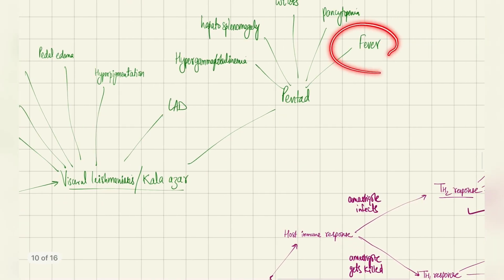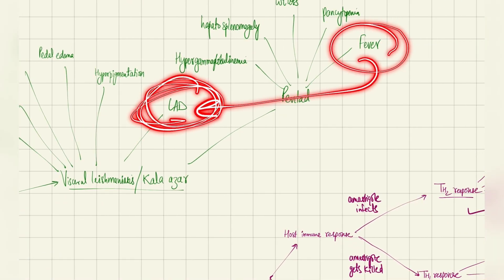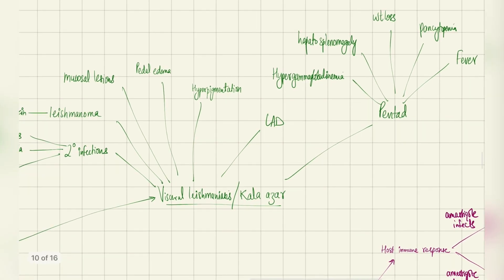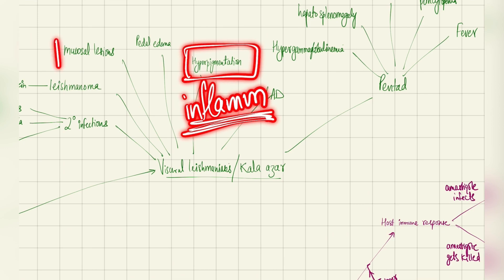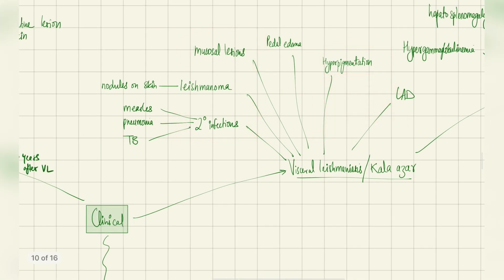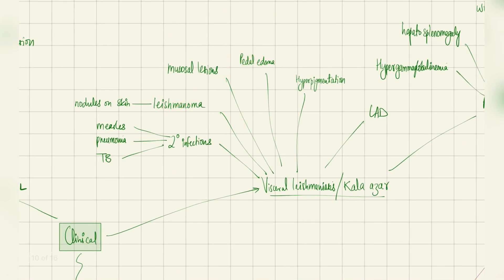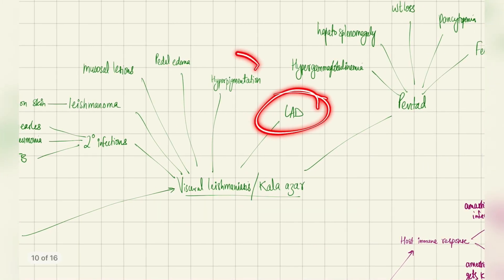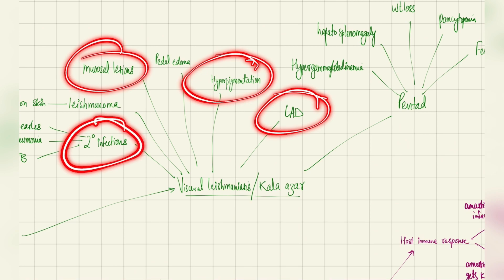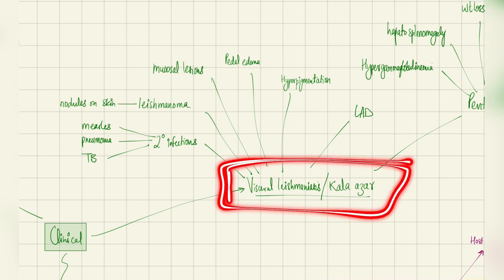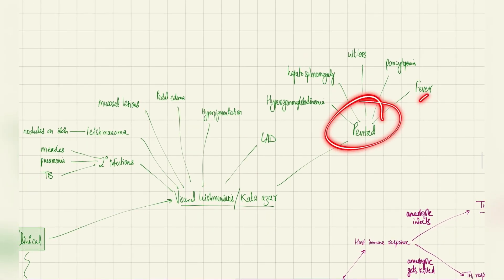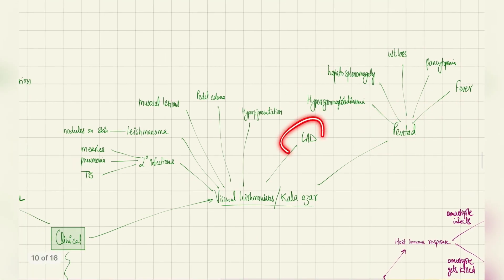Apart from the pentad, additional features include lymphadenopathy, hyperpigmentation, mucosal lesions, and secondary infections such as measles, pneumonia, and TB. Fetal edema and leishmanioma — nodules on the skin — can also occur. So visceral leishmaniasis is remembered by the pentad plus these secondary features of lymphadenopathy, hyperpigmentation, mucosal lesions, secondary infections, fetal edema, and leishmanioma.